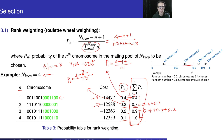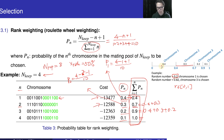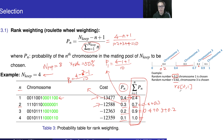To use rank weighting to select a parent, we generate a random number in the range of 0 to 1. For the first parent, if the random number is 0.2, it falls in the range 0 to 0.4, so we pick chromosome 1. We need two chromosomes to act as parents, so we generate another random number — for example 0.82 — which also falls in the chromosome 1 range. That is how we select chromosomes according to the calculated probability.